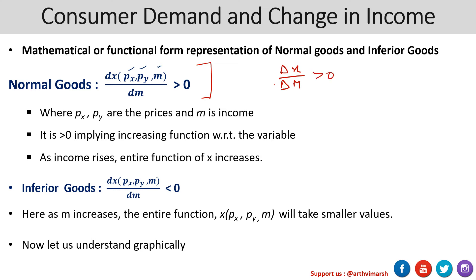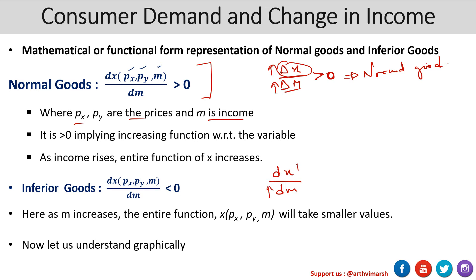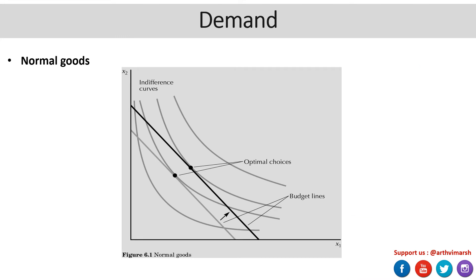Because as income increases, demand for x also increases, which means this expression is going to be positive — implying it is a normal good. Likewise, for an inferior good, if demand for commodity x reduces when income increases, this partial derivative is going to be negative — less than zero. So here, as M increases, the entire function takes smaller values.